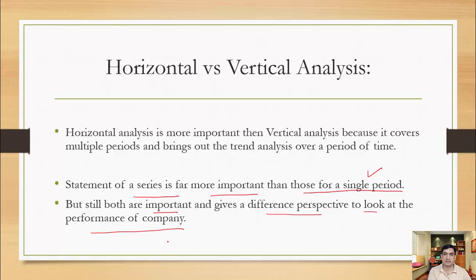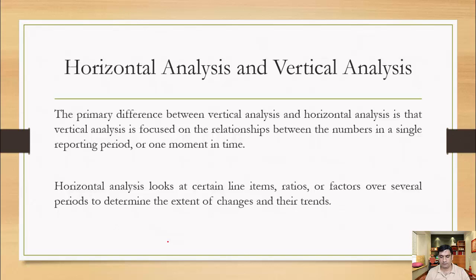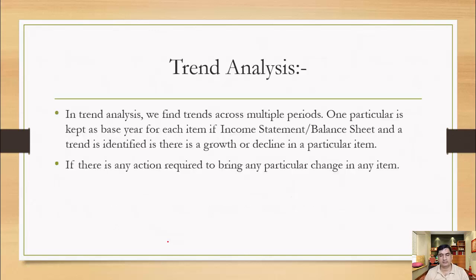Both analyses are important and give you a different perspective to look at the performance of the company. In just five minutes, if you want to analyze financial statements, you do horizontal analysis and vertical analysis and it will give you some insights about company trends. The primary difference is that vertical analysis focuses on the relationship between numbers in a single period, while horizontal analysis looks at certain line item ratios and factors over several periods to determine the extent of changes and their trends. The third analysis within company trends is trend analysis, which we will look at in the next video.